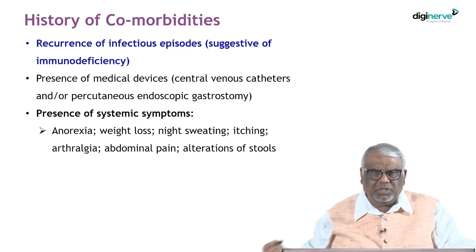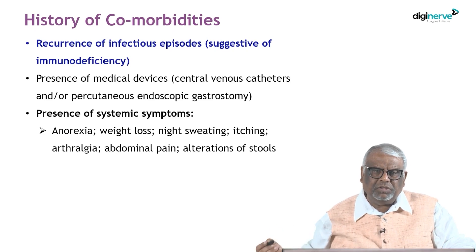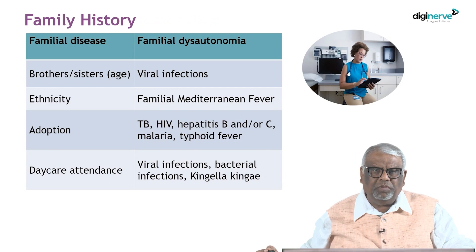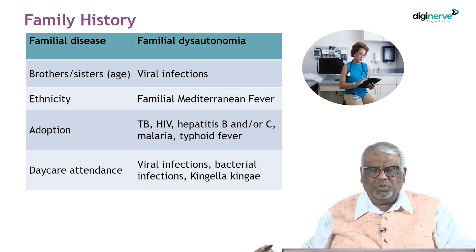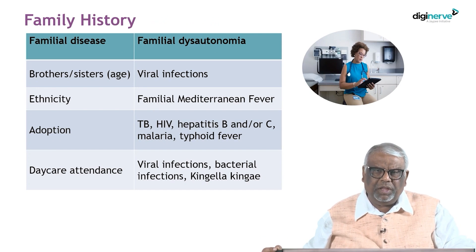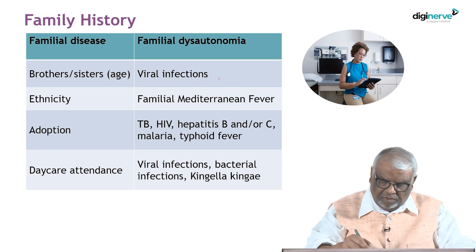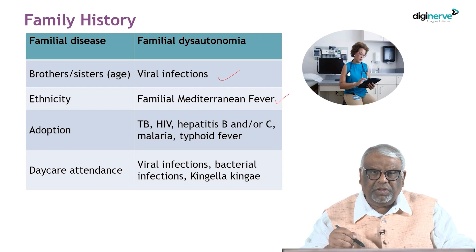Ask about history of comorbidities. Recurrent episodes of infectious illness point towards immunodeficiency. Ask about presence of medical devices — central venous catheters, shunts, gastrostomy — and any presence of specific symptoms. Family history may help, as you can identify familial diseases. For example, in familial dysautonomia, siblings of the same age are affected, and ethnicity can point to Mediterranean fever.